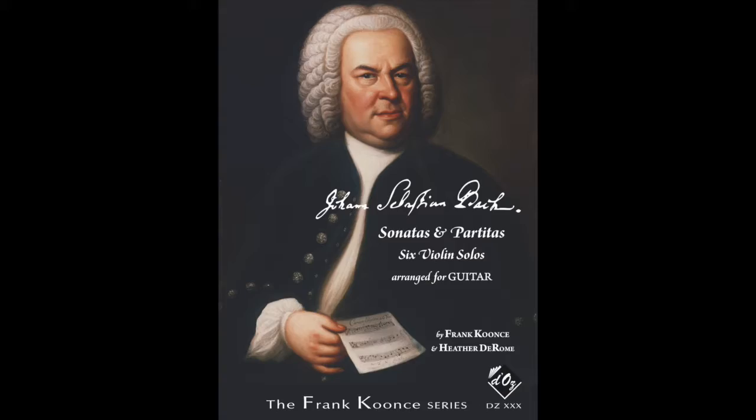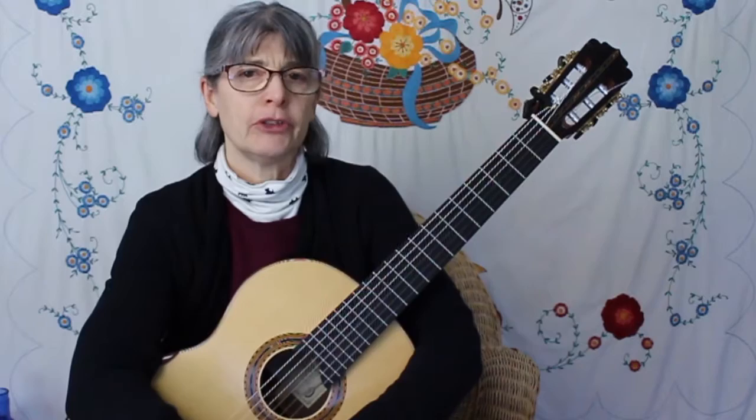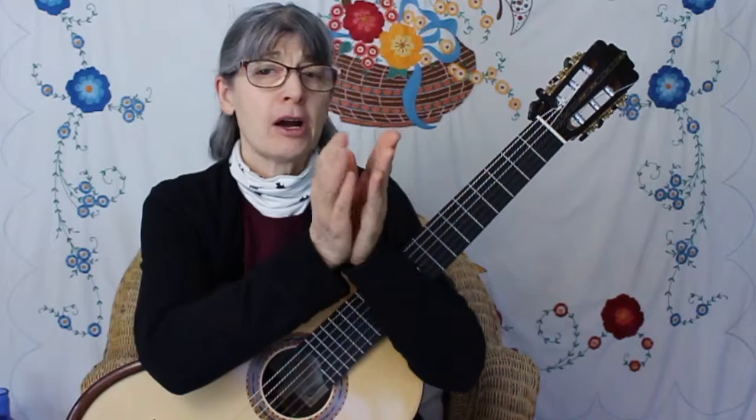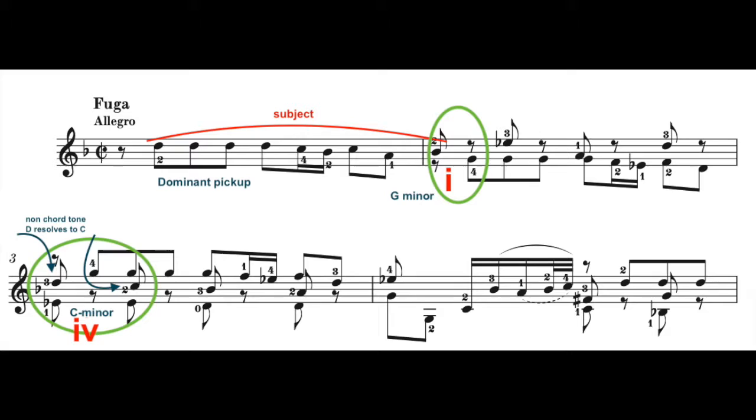Hi, this is Heather Derholm from heatherderholm.ca and from sonatasandpartitas.com. This video is just a little addition to a video that we shared recently about the G minor fugue, when I mentioned that in the exposition Bach instead of going tonic dominant tonic dominant, he goes from the tonic to the subdominant, and I wanted to expand on that a little bit.